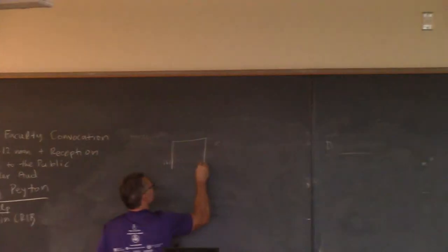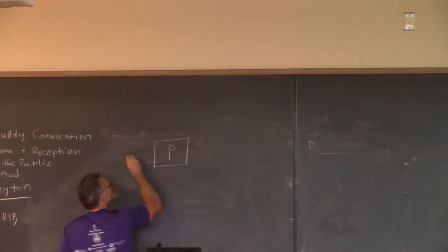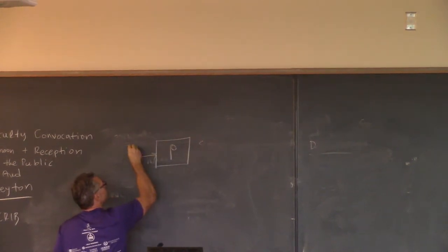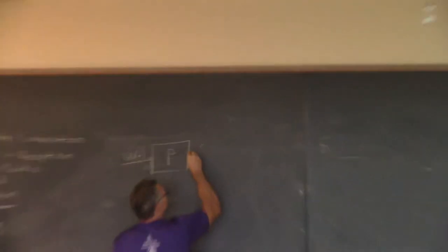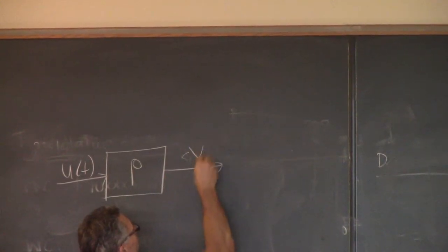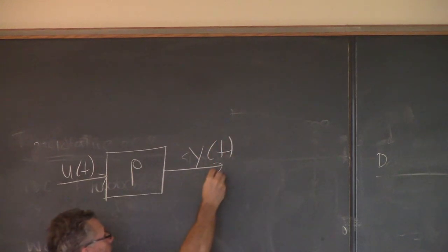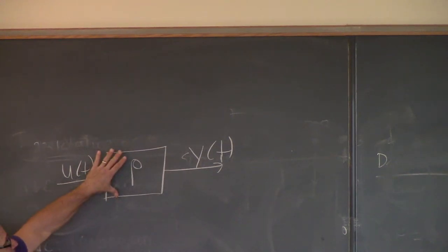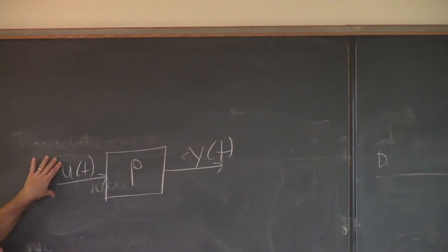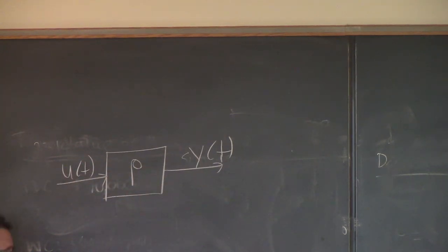So we have some process here — let's call it P. I'm interested in specifying some input that changes as a function of time and calculating what the output is — the response of the system in terms of that output as a function of time. So I give you a model of this process in terms of differential equations, I specify what the input looks like, and what I'm interested in is computing what the output looks like, the response of the system.